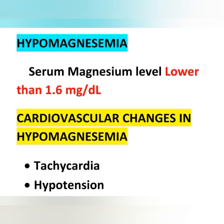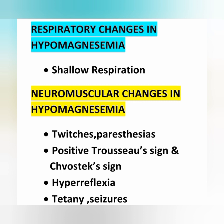Hypomagnesemia means serum magnesium level is lower than 1.6 milligrams per deciliter. Cardiovascular changes include tachycardia and hypotension. Respiratory changes include shallow respiration. Neuromuscular changes include muscle twitches, paresthesia — abnormal painful sensation — positive Trousseau sign, Chvostek sign, hyperreflexia, and tetany.